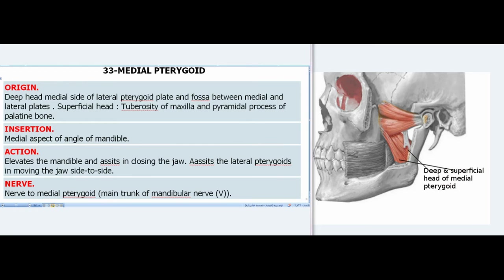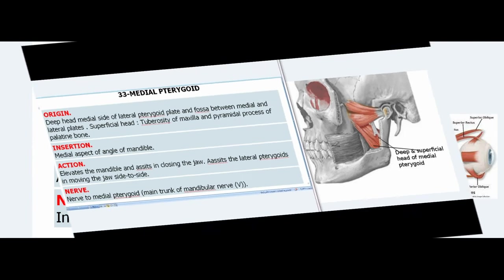33. Medial Pterygoid. Origin — Deep head: medial side of lateral pterygoid plate and fossa between medial and lateral plates; Superficial head: tuberosity of maxilla and pyramidal process of palatine bone. Insertion: Medial aspect of angle of mandible. Action: Elevates the mandible and assists in closing the jaw; assists the lateral pterygoids in moving the jaw side to side. Nerve: Nerve to medial pterygoid, main trunk of mandibular nerve (V).